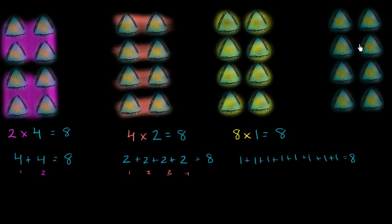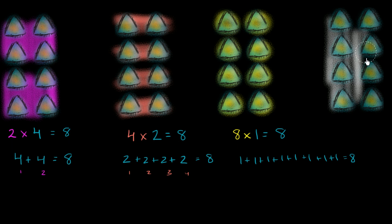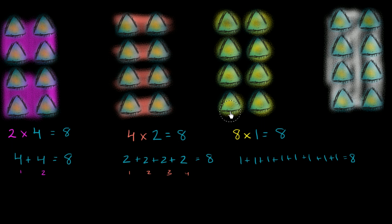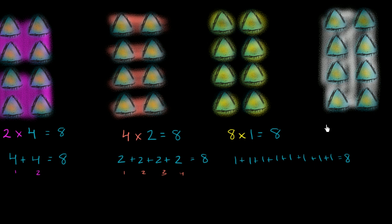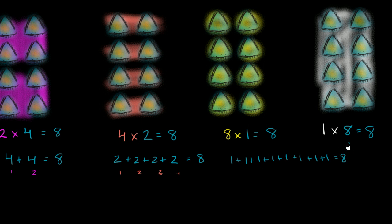Now, what's another way of getting to eight? You could literally view it as one group of eight. So this is just one entire group of eight — the whole thing is a group of eight. So we could write this down as one times eight, and one times eight is equal to eight. We only have one eight now, so we don't have to add that one eight to anything else — one eight is clearly just equal to eight.